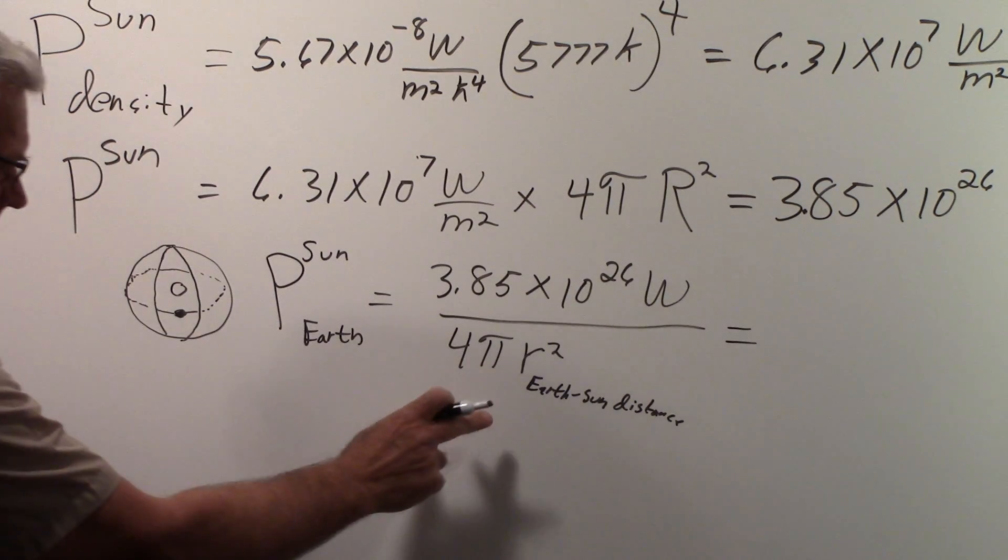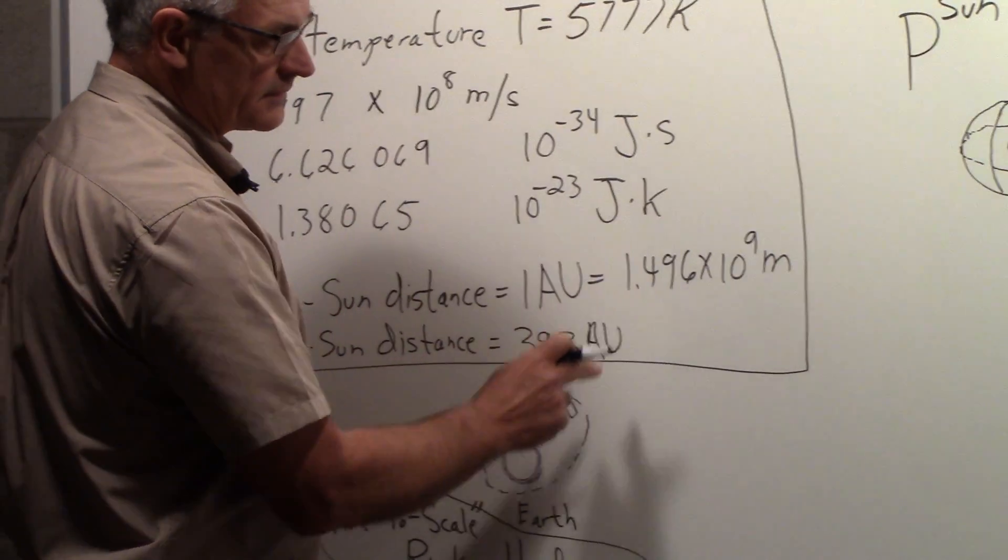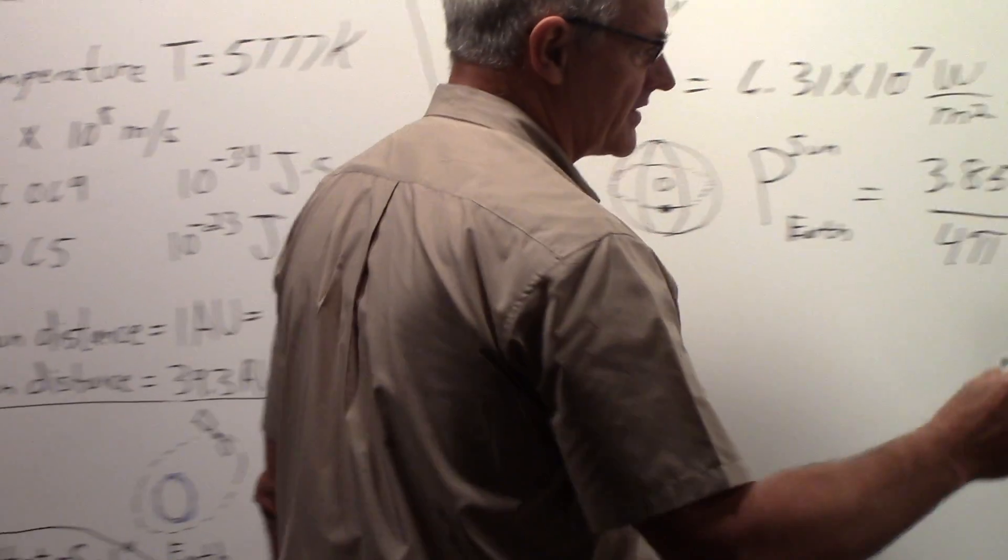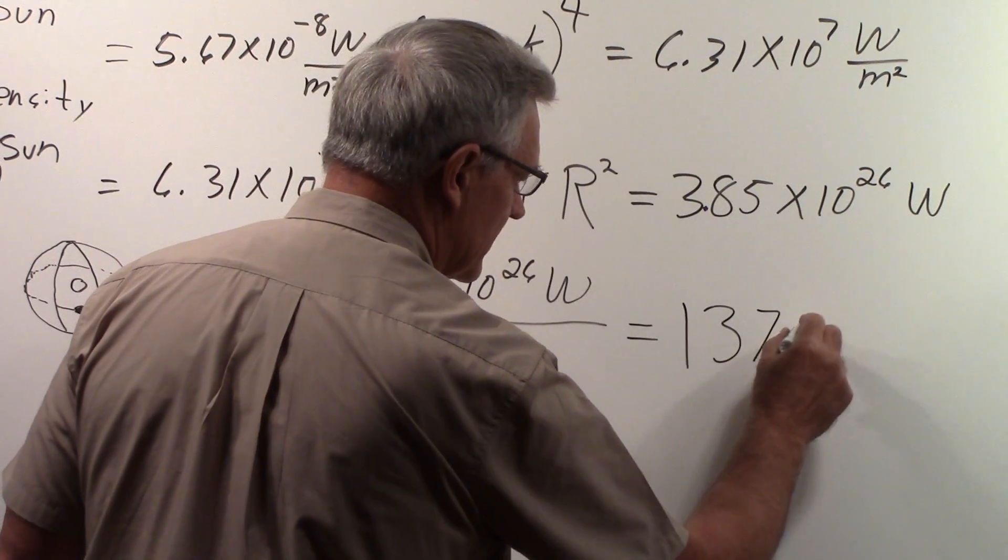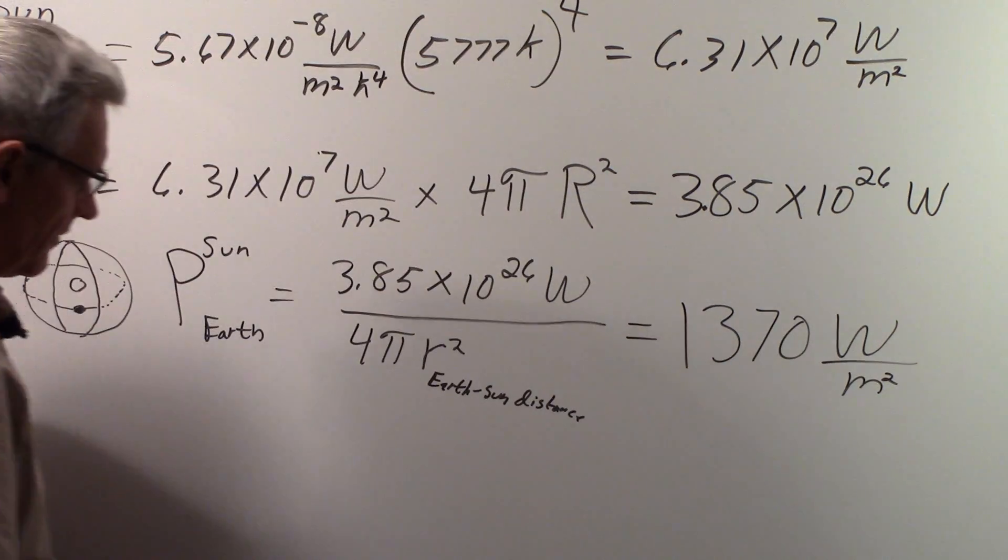So that will give us watts per meter squared. And if we put in the earth's orbit distance, which I show here, and work this out, you'll get approximately 1,370 watts per meter squared at the earth.